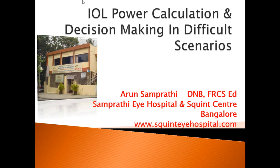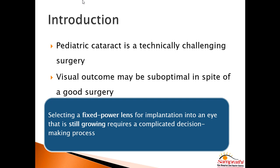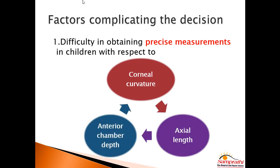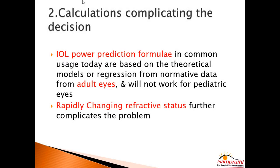Coming to the IOL power calculation, we all know that pediatric cataract is not a simple adult cataract. Technically the surgery is more difficult. You are trying to implant a fixed power lens into an eye which is still growing, meaning the refraction is changing every month. The factors that complicate this decision process include: first, difficulty in obtaining precise measurements — keratometry readings, axial length, and anterior chamber depth — and second, the calculation itself, since all IOL formulas have been designed based on adult data and don't fit pediatric eyes.